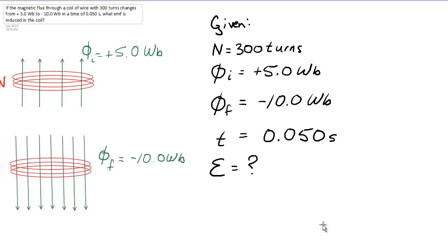So I get field lines that are not only changing direction, but far more dense. They're larger and they've changed direction. So hence the negative 10.0 Webers.